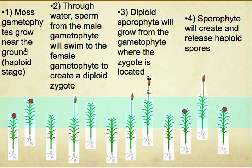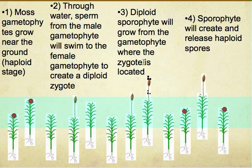The first step of the moss life cycle is that the gametophyte grows near the ground, which is the haploid stage. The second step is that through water, the sperm from the male gametophyte swims to the female gametophyte to create a diploid cell. Swimming to the female gametophyte basically means it's going through the process of fertilization. The third step is that it becomes diploid — the diploid sporophyte will grow up from the gametophyte where the zygote is located.